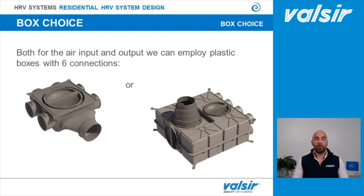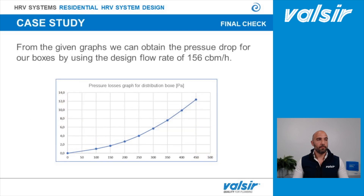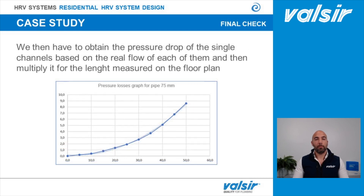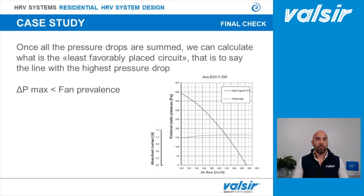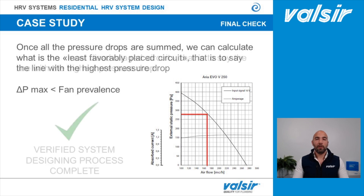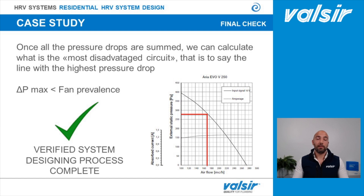Once pipes are chosen, we select the distribution box — in this case the six-connection box. We then sum up all the pressure drops related to the box and all the pressure drops per pipe, as shown in the charts, along with pressure drops from external grids, connections, deadeners, and grip adapters. In the final check, we identify the highest pressure drop air path and confirm that the total pressure drop is lower than the fan prevalence. If verified, the designing process is complete.